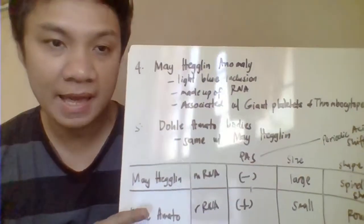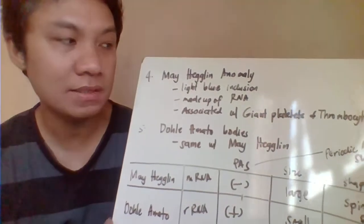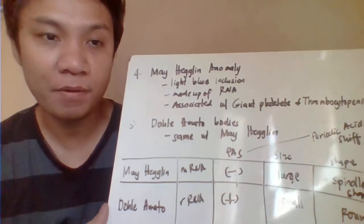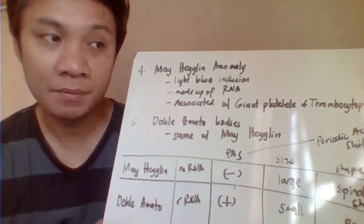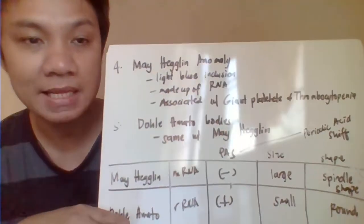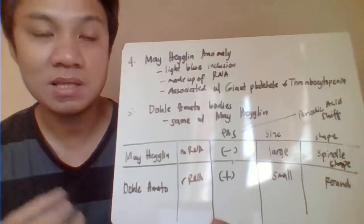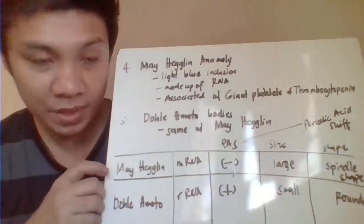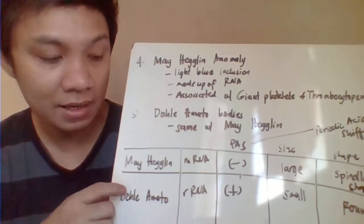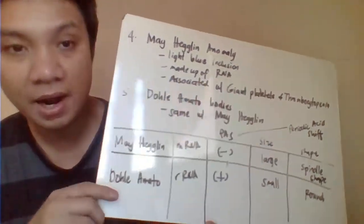WBC anomaly — we have here the May-Hegglin anomaly and Döhle bodies. The May-Hegglin anomaly is primarily light blue cytoplasmic granules, primarily made up of RNA. Also associated with giant platelets but that one is thrombocytopenia — large platelet size but decrease in platelet count. The difference between May-Hegglin and Döhle bodies: May-Hegglin is made up of mRNA, whereas Döhle bodies are made up of rRNA.